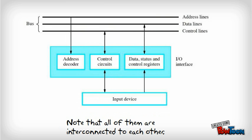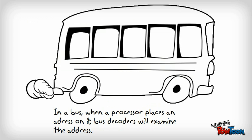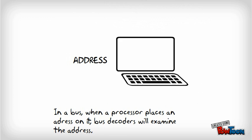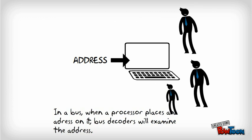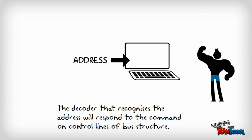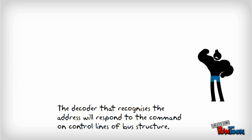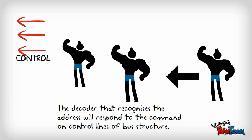When a processor places an address on the bus, bus decoders will examine the address. The decoder that recognizes the address will respond to a command on the control lines of the bus structure.